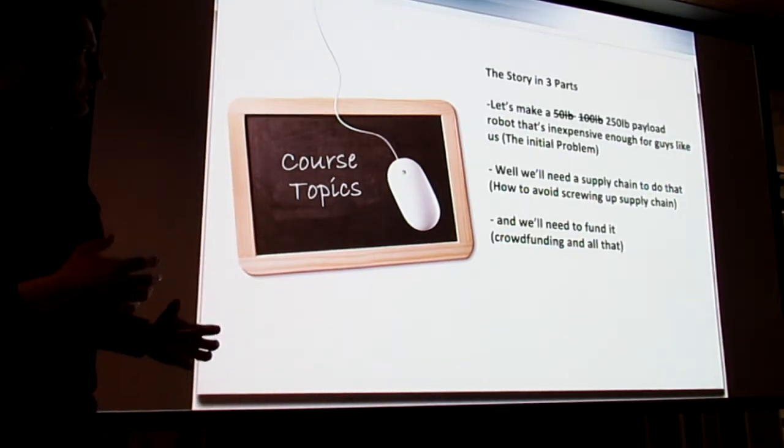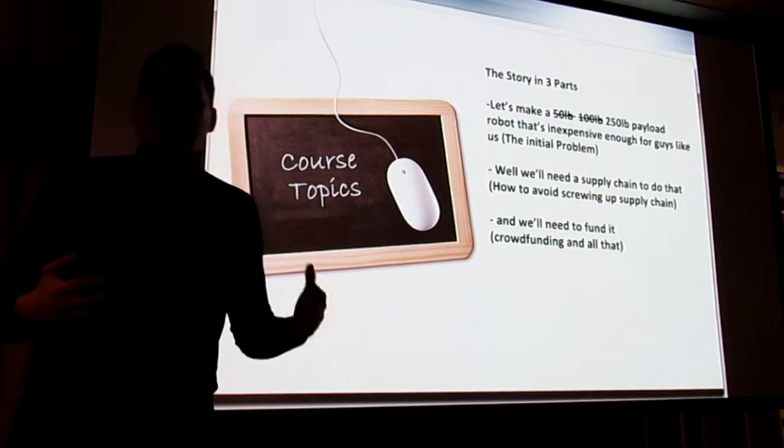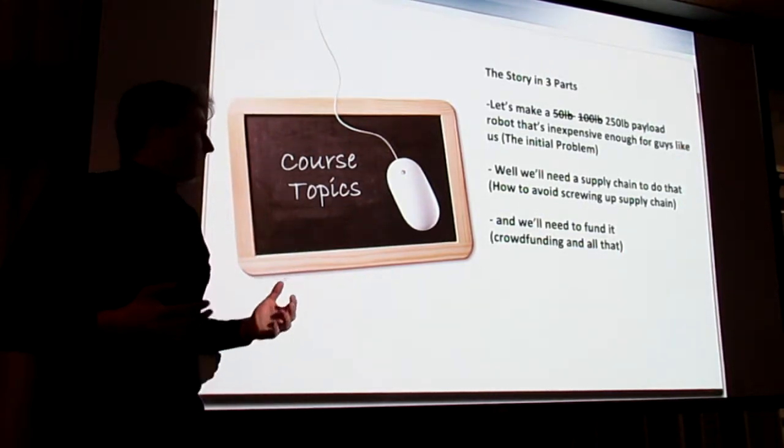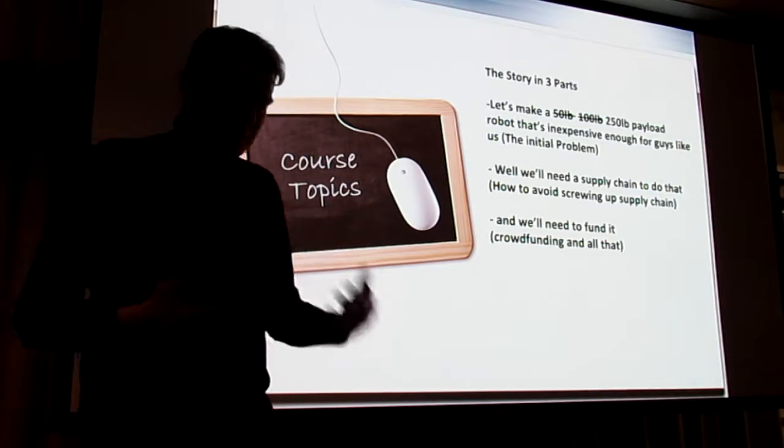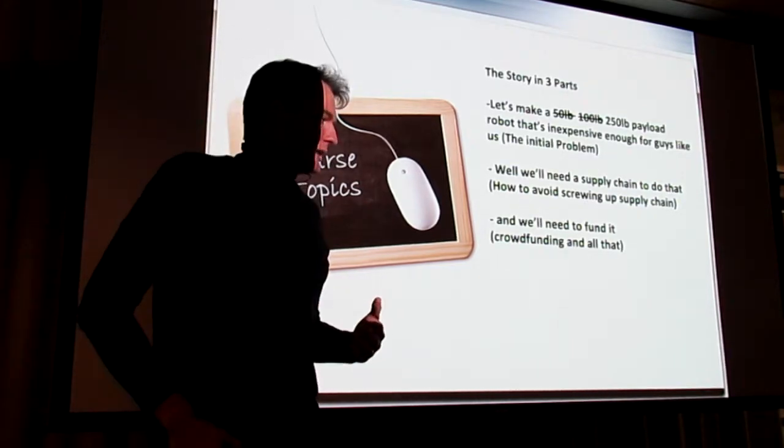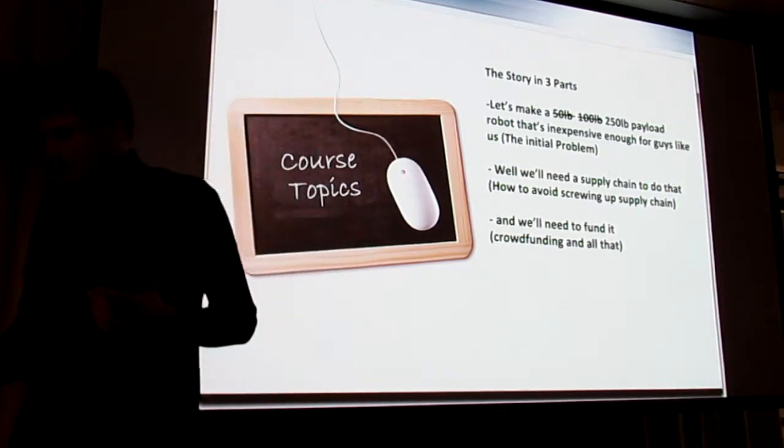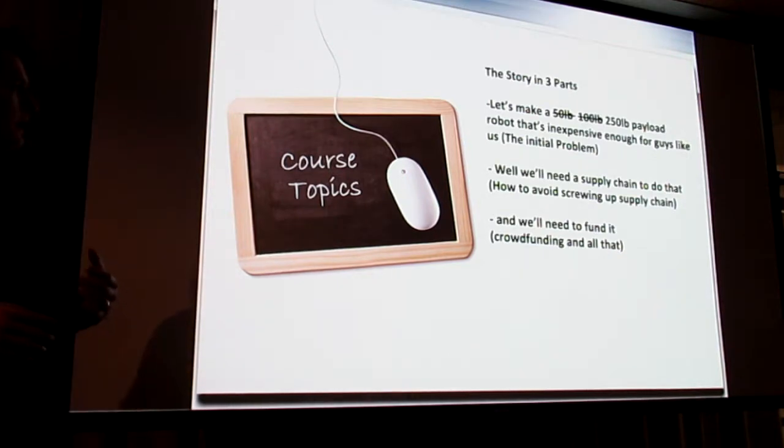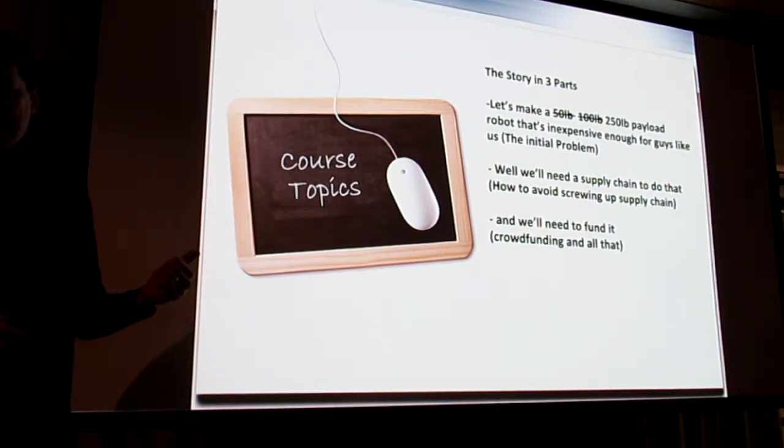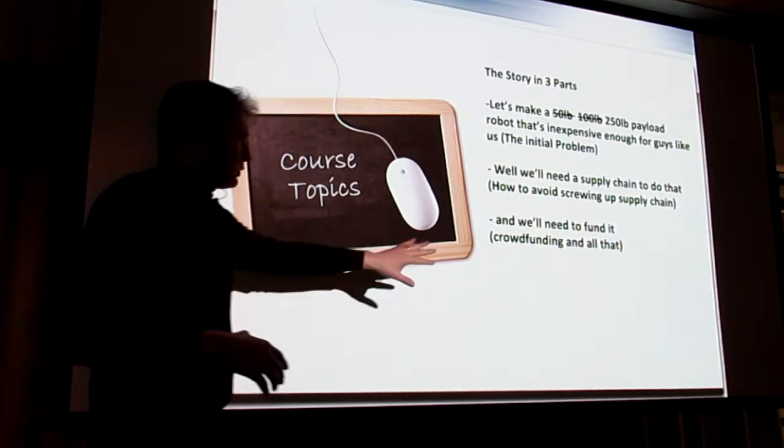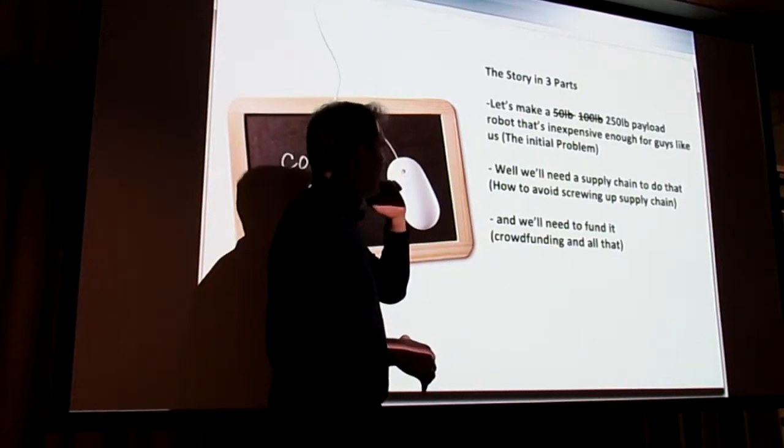The second part of the story is, well, we need a supply chain to do that. It's not okay just to be able to build one robot. We need to build a supply chain to do that. I'm going to be talking a little bit about supply chain in this talk. And then we need to fund it. So we're going to be talking a little bit about crowdfunding and all that.